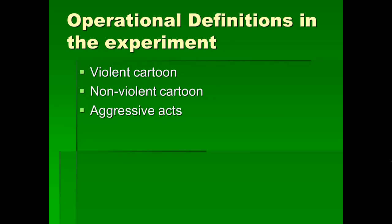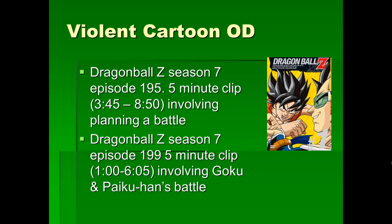In the experimental example, there are three operational definitions: violent cartoon, nonviolent cartoon, and aggressive acts. For a nonviolent cartoon, it's an episode of Dragon Ball Z, season seven, episode 195 — a five-minute clip from three minutes and 45 seconds into the program, where they're sitting around talking about the upcoming battle and trying to figure out a strategy. That's a good operational definition. Now that I've described this to you, you could go out and replicate that part of the experiment exactly.